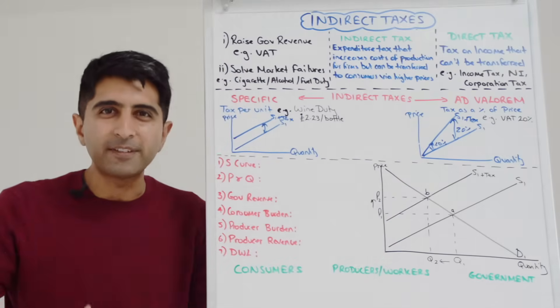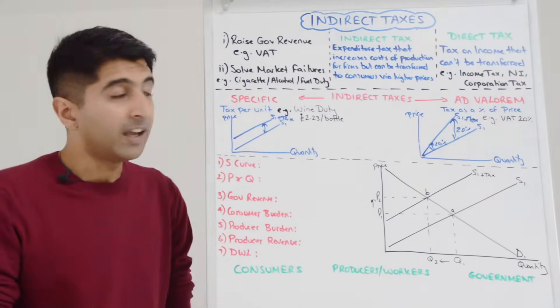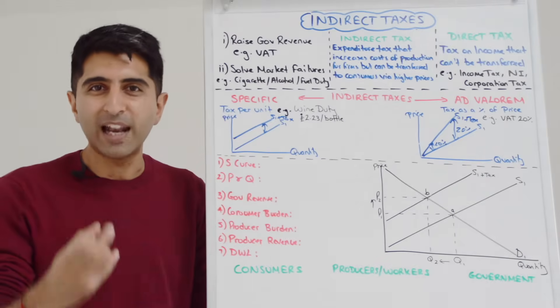So even though the percentage is 20%, the amount of revenue collected by the government is quite high. Whereas over here with low prices, 20% of a low number let's say £10 is only £2. So the amount of government revenue collected is low.